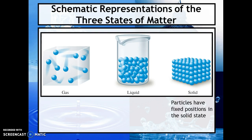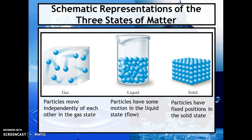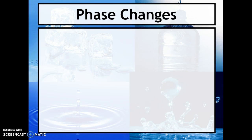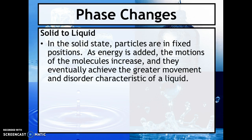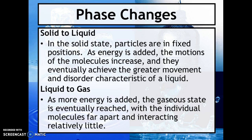In a solid, particles have fixed positions. In a liquid, they flow past each other. In a gas, they move independently of one another. When we go from solid to liquid, particles in fixed positions start to vibrate more and eventually overcome intermolecular forces to become a liquid. In your phase diagram, every bit of energy added at the plateau helps overcome those forces. From liquid to gas, we continue adding energy until reaching the gaseous state.